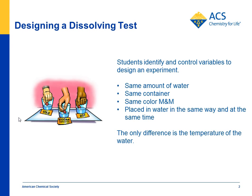Students are asked to help design an experiment to see if temperature affects the amount of dissolving from an M&M. Students should come up with ideas like: you need to use the same amount of water in the same type of cup, you need to use the same color M&M because the color might matter, and you need to put them in at the same time and in the same way.